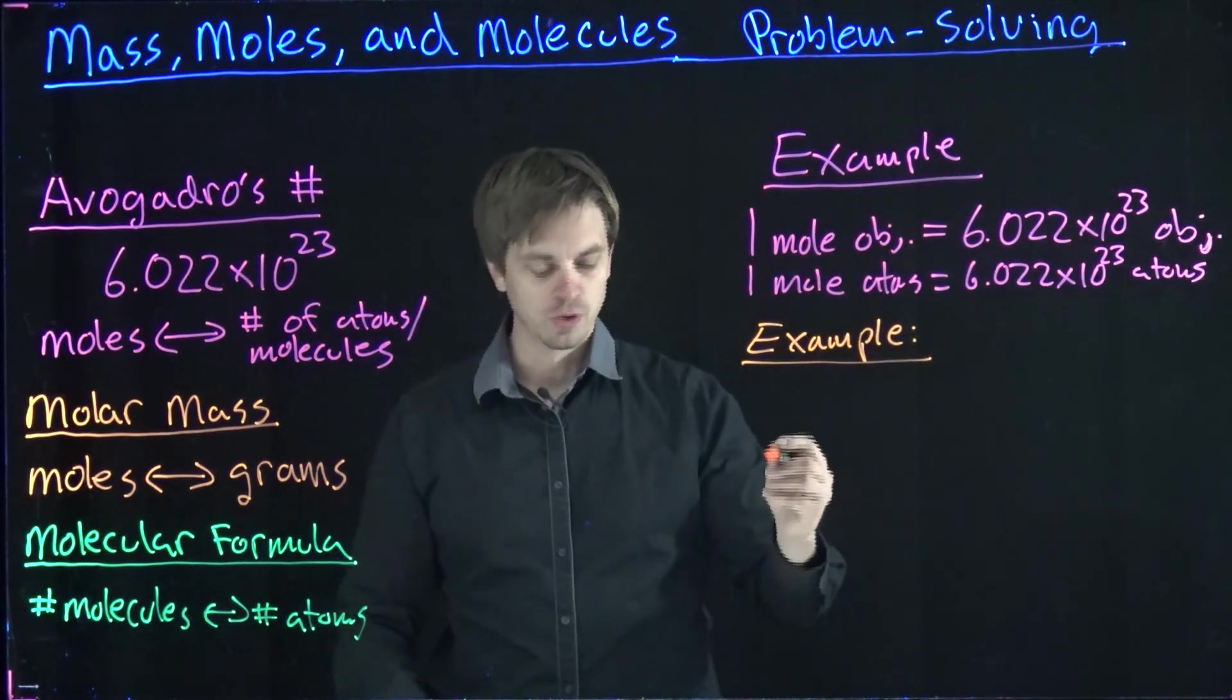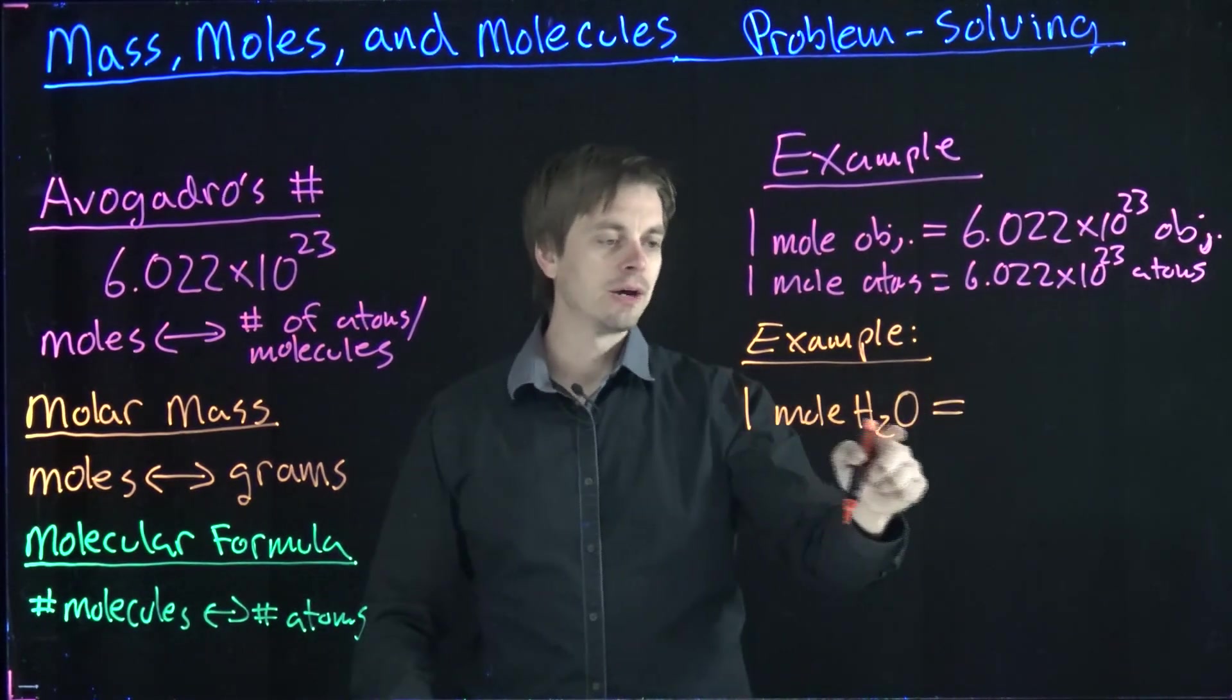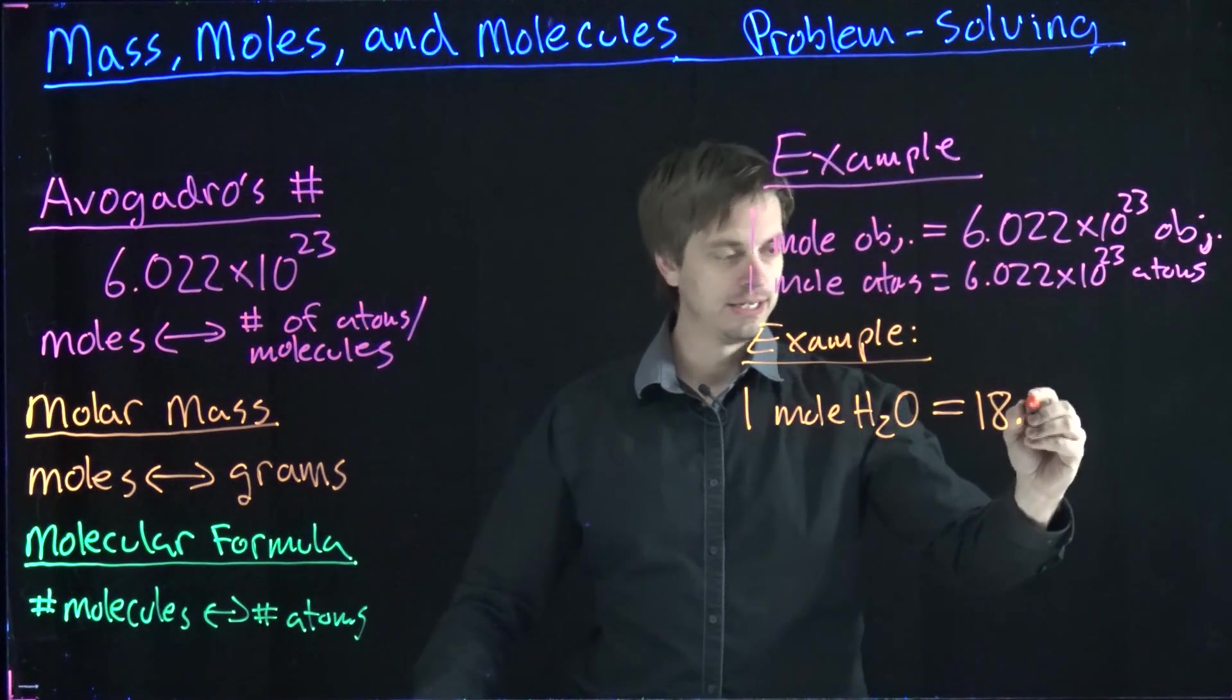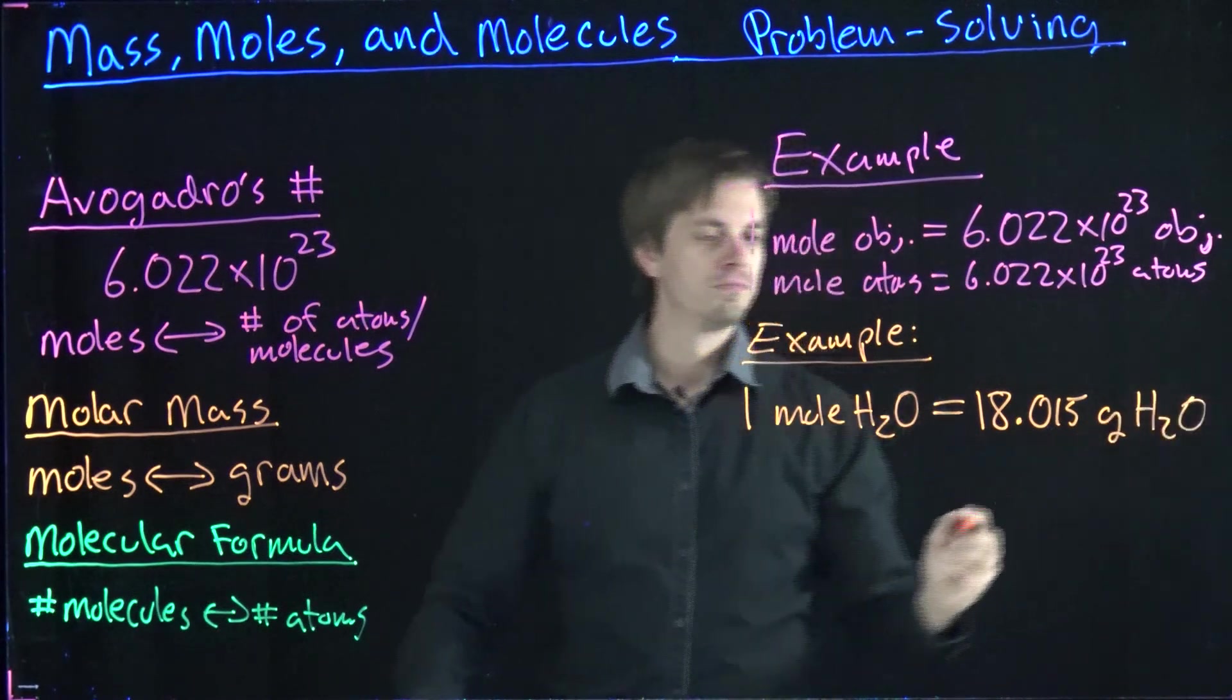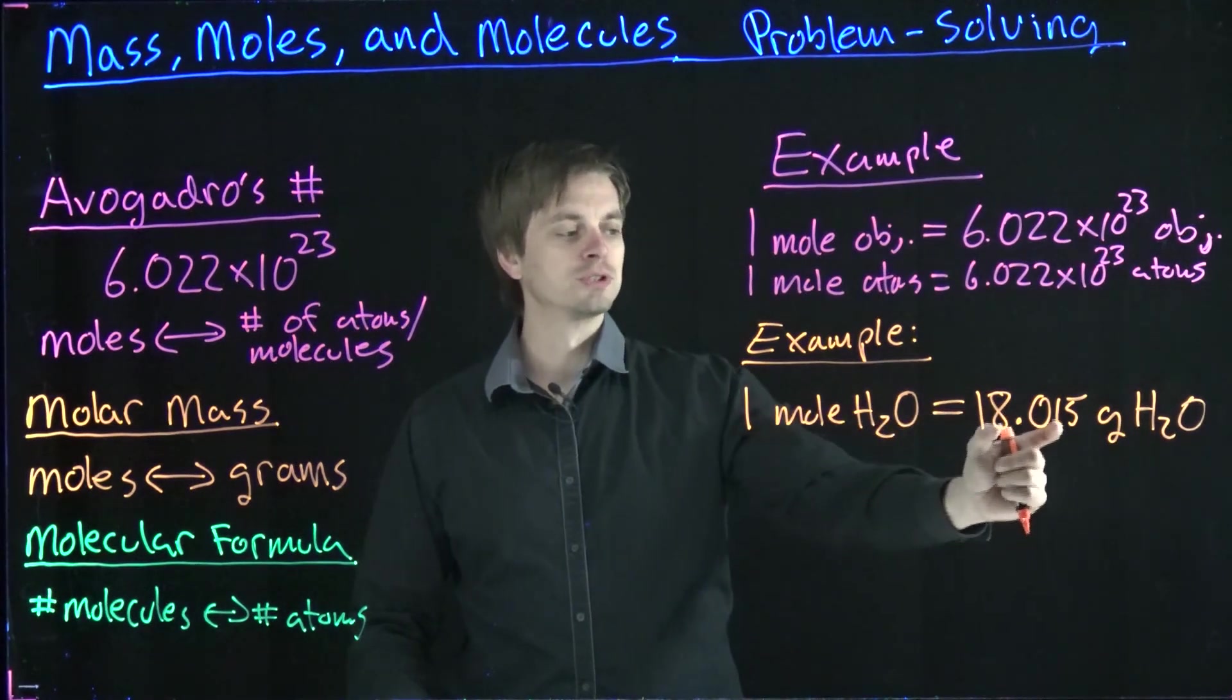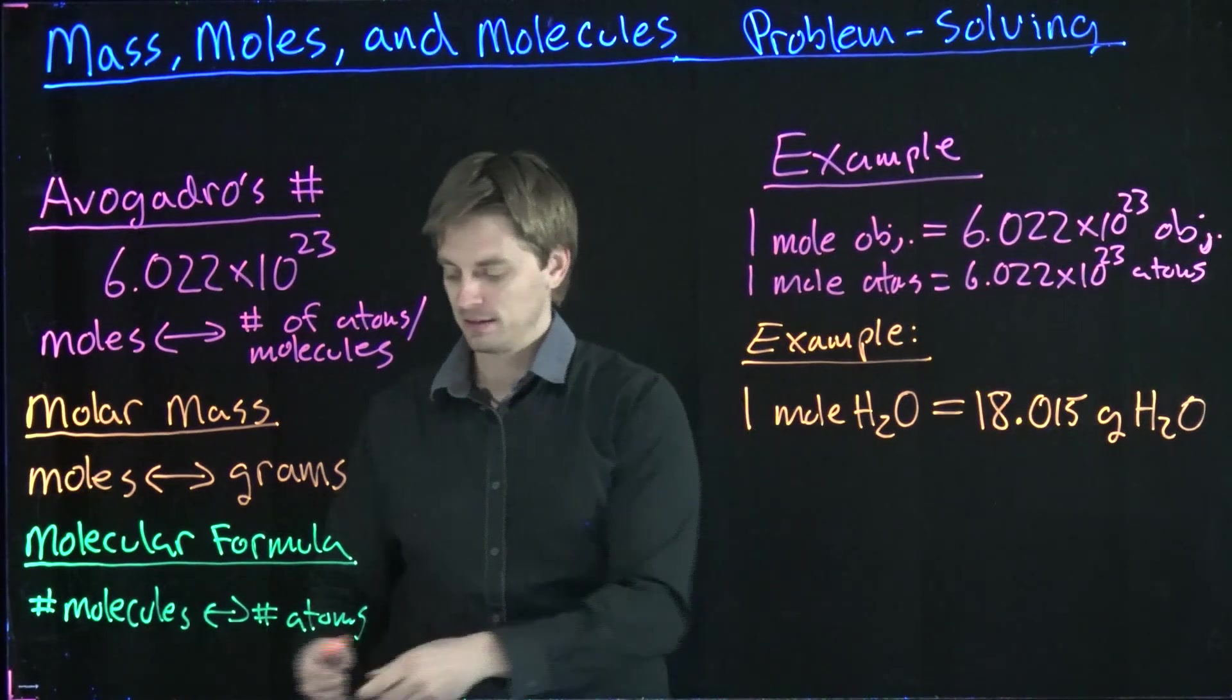An example: if we have one mole of H2O or water molecules, and we add up the mass from the periodic table of two hydrogen atoms and one oxygen atom, we will get a value of about 18.015 grams of H2O. This is our molar mass. So if I have one mole of those water molecules, it's going to weigh approximately 18.015 grams.